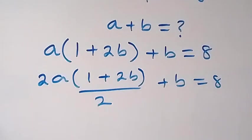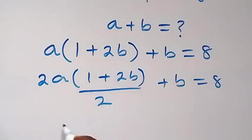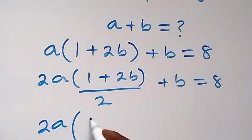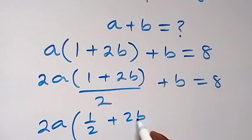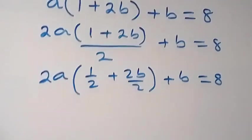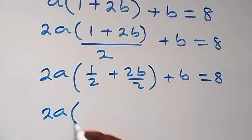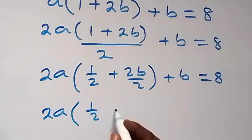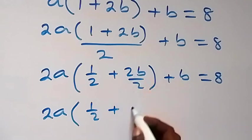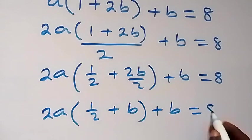So here, going to cancel 2a — we still have the same thing. Then here, we can write it as 2a into bracket 1 over 2 plus 2b over 2, then plus b equals to 8. That is, now we have 2a into bracket 1 plus b, then plus b equals to 8.